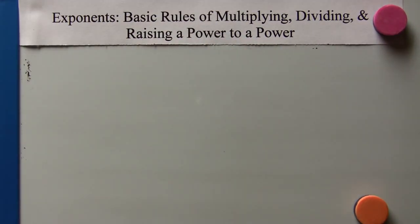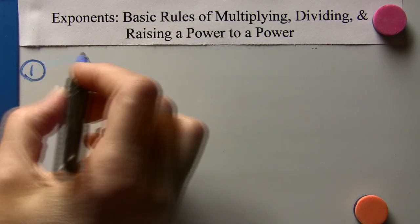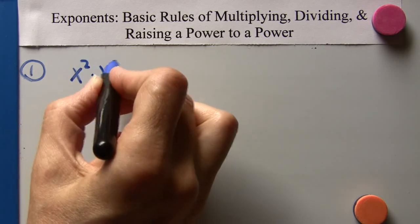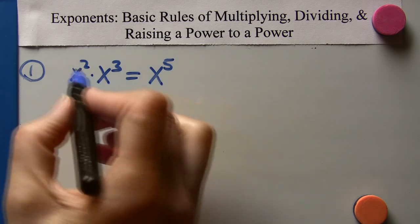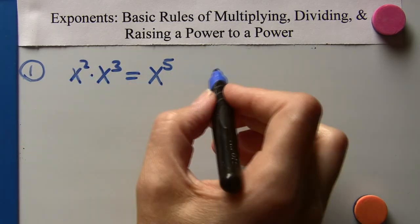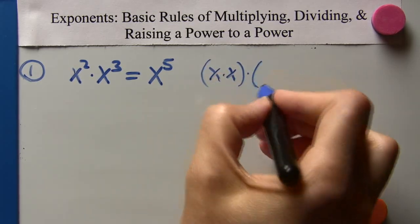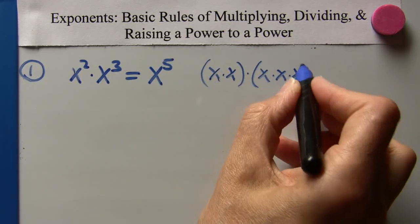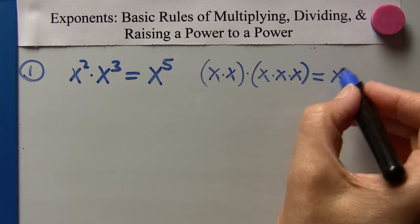Going right into our first example: x squared times x cubed equals x to the fifth. If we break this down, x squared is x times x, and x cubed is x times x times x. So if we multiply all of these together, we get x to the fifth.